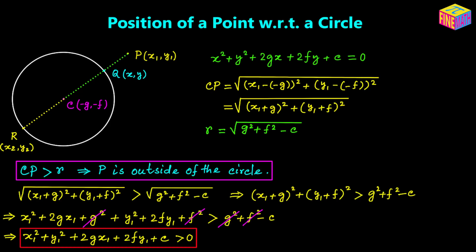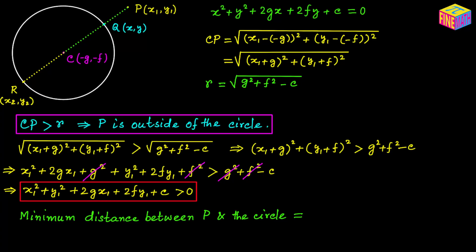The maximum distance between the circle and point P would be PR, which equals PC + CR. CR is nothing but the radius of the circle, which we already know from the given equation. So the maximum distance is PR = CP + R, and the minimum distance is PQ = CP − R.